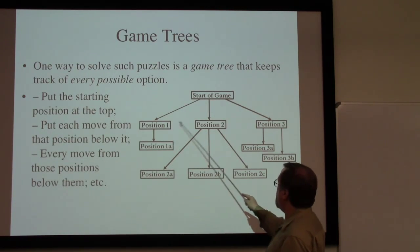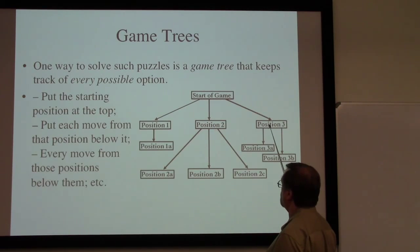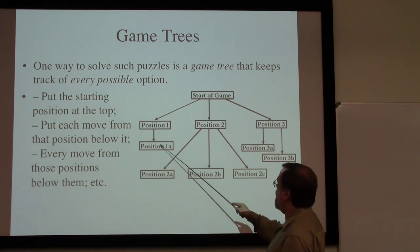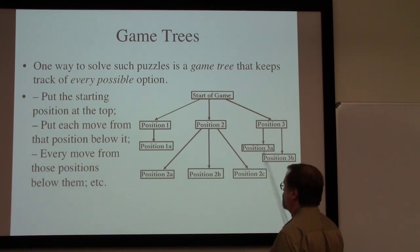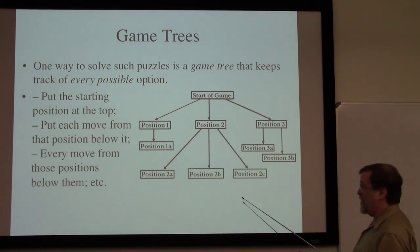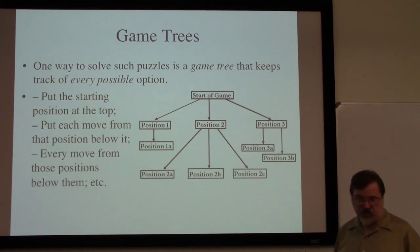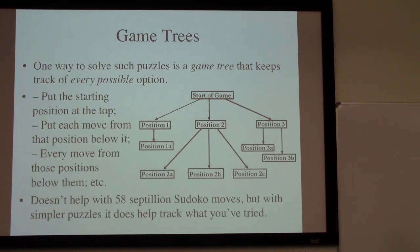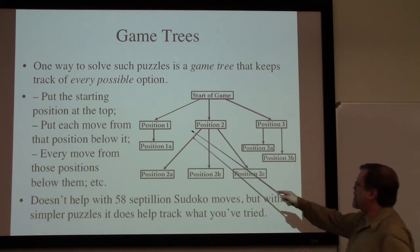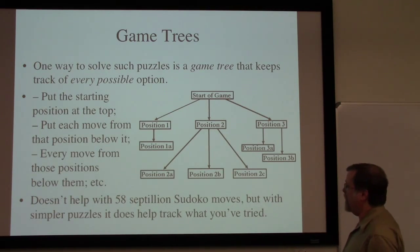The basic idea of a tree: start here, then put the possible positions reachable with some move, and under each of those, put what positions you can get to from there. Usually these puzzles have more than two moves, so we continue the tree and think through all the different kinds of positions we might get to. With simpler puzzles, this helps track what we've tried and what positions we can check off as we work our way through and see what moves we haven't tried yet.